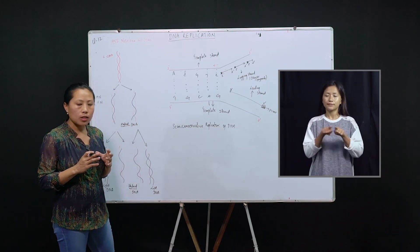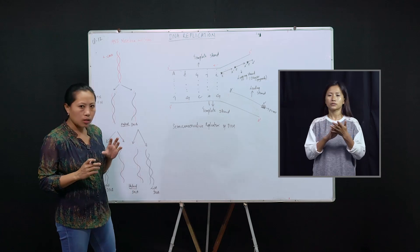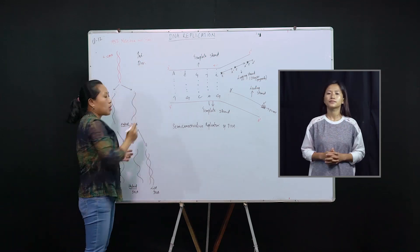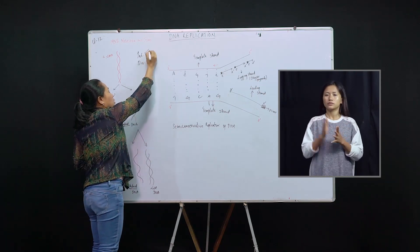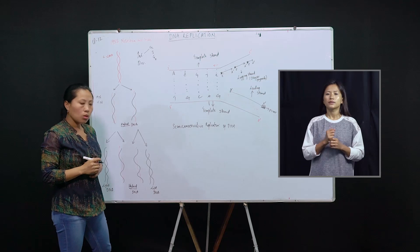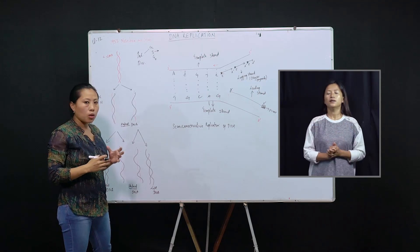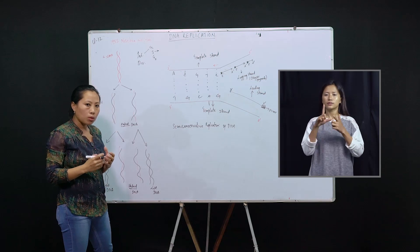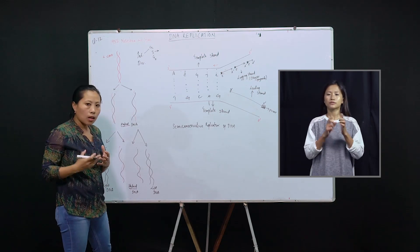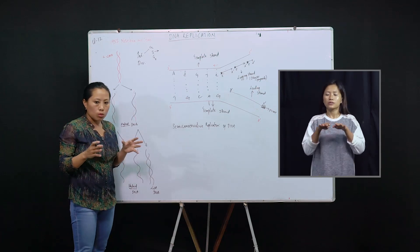You must be familiar with the cell cycle from class 11, where the cell divides mitotically and meiotically. In a cell cycle there are two phases: the interphase and the division phase. The interphase consists of G1, S, and G2 phases. It is in this S phase of the cell cycle where DNA replicates — the amount of DNA doubles — and subsequently the cell divides and gives an equal number of chromosomes into the daughter cells.